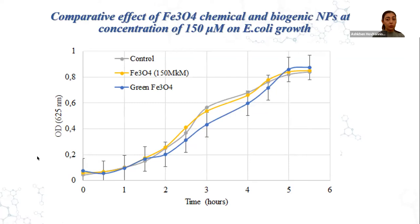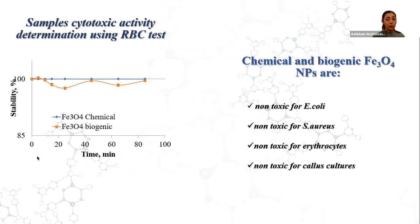Regarding hemolytic toxicity against human erythrocytes, the results reveal that both chemical and biogenic nanoparticles preserve erythrocyte resistance by 100%. Although not shown here, tests were also carried out on cell cultures using the model of Linium austria, and we also do not see any pronounced cytotoxic effects. From all the above results, we can conclude that both chemical and biogenic nanoparticles are non-toxic for gram-positive and gram-negative bacterial strains, non-toxic for erythrocytes, and show no toxic properties for cell cultures.